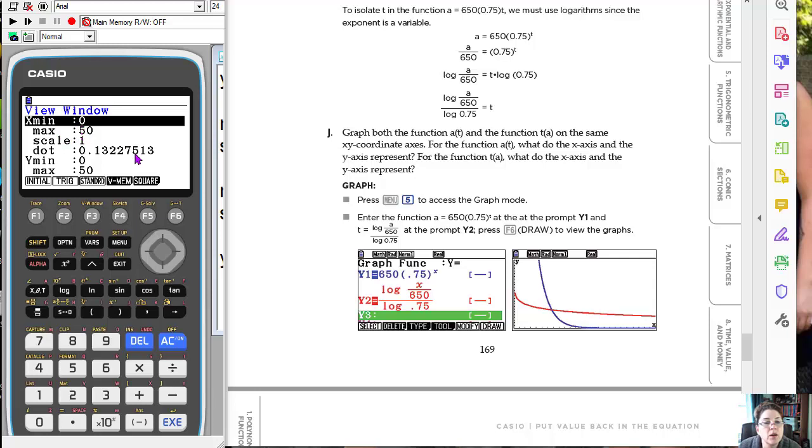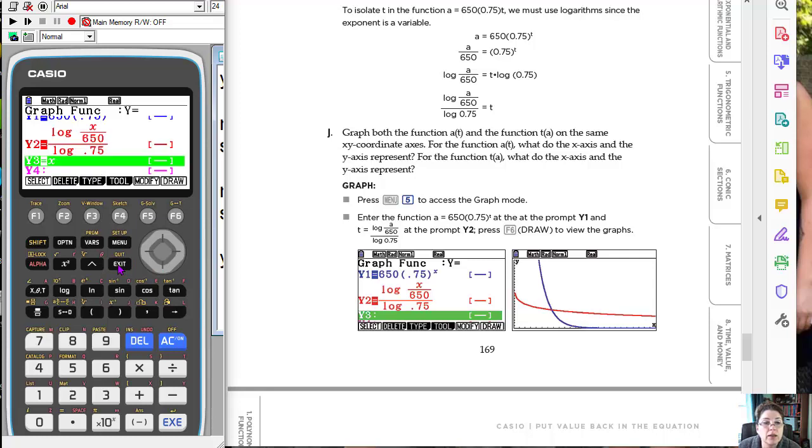So the suggestion and the activity is to start with a window of 0 to 50 for both scale of 1 or 10. And so I did that, you'll see, I've changed the y min to 0, the max to 50, put a scale of 10. So then when I hit exit, and I've put the y equals x, the identity function here. So now when I hit draw, because I changed my window, you actually can see where the graphs are now.